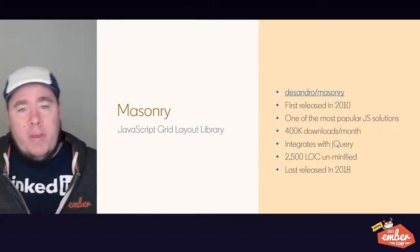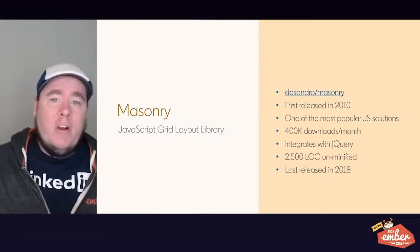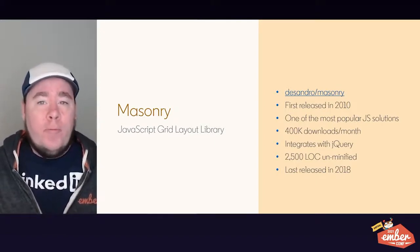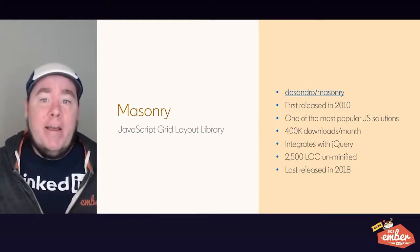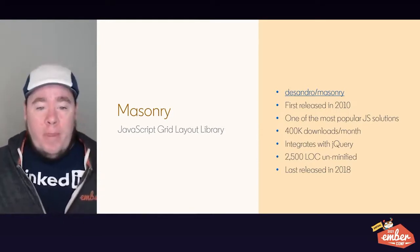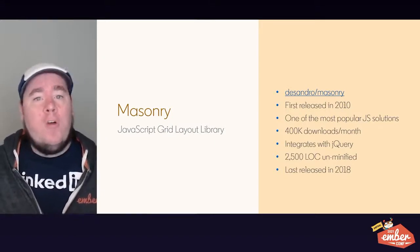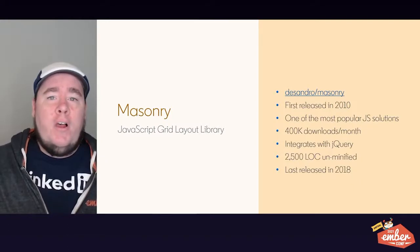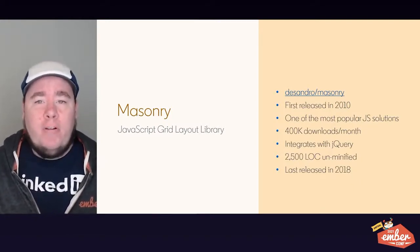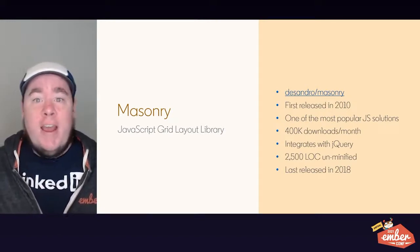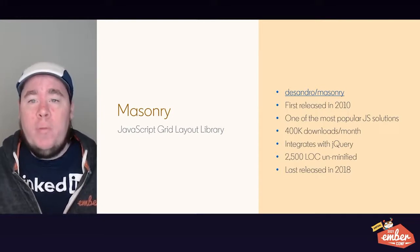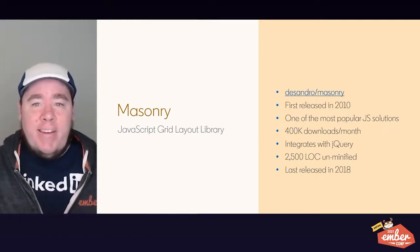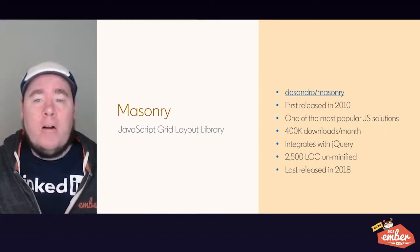Many of you may know about the masonry JavaScript library found on GitHub at desandro/masonry. It was first released in 2010 and is one of the most popular JavaScript solutions for masonry layouts today, with over 400,000 downloads a month on NPM. Part of its popularity came from strong integration with jQuery. However, the library itself is 2,500 lines of code unminified, whereas the solution I'm going to show you takes less than 150 lines to implement in Ember. Additionally, masonry.js was last released in 2018, so it hasn't received any modern updates.